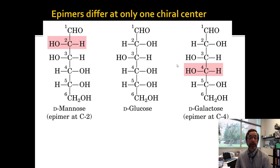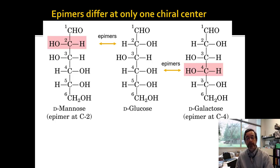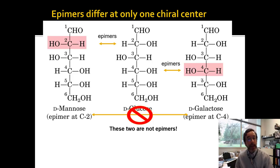Another important term to remember is epimers. Epimers are sugars that are different only at one chiral center. Mannose and glucose are epimers because their C2 positions have different chirality — the OH is to the right for glucose and to the left for mannose. Galactose and glucose are epimers at C4. Importantly, galactose and mannose are not epimers because they differ at two carbons. Epimers only have one difference between them.